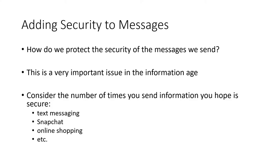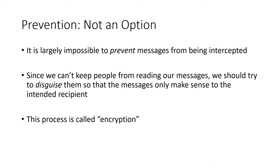We want to protect the security of the messages that we send, and this is really important in our information age. Think about the number of times that you send information you hope is secure — a text message to a friend, Snapchat, online shopping. These are things where you're sending information and you want to be confident that the wrong person is not receiving it. It's really not an option to prevent messages from being intercepted — we're sending signals through the air, through cell towers, through space. So instead, what we have to do is disguise the message so that even if somebody intercepts it, they won't be able to read it. This process of disguising our message is called encryption.